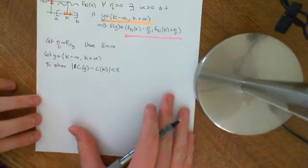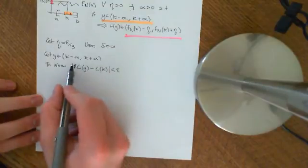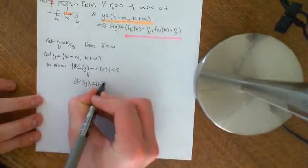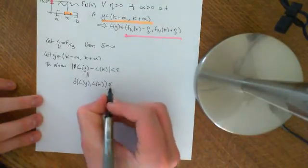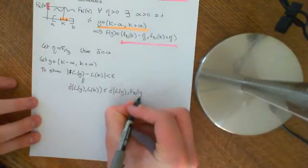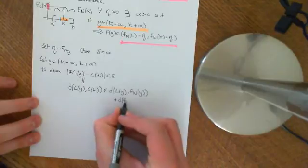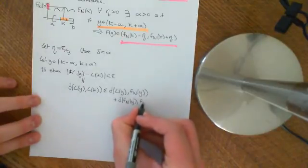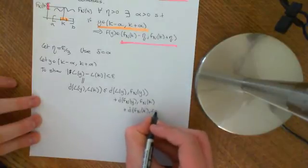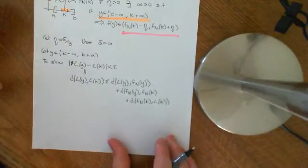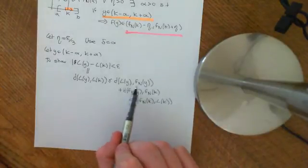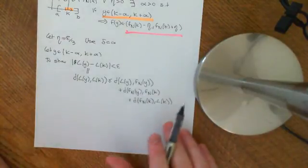We're going to apply the triangle inequality for the real numbers. This is effectively the distance between L(Y) and L(K). So this is going to be less than or equal to: the distance from L(Y) to f_N(Y), plus the distance from f_N(Y) to f_N(K), plus the distance from f_N(K) to L(K). We've used the generalized triangle inequality — you get that by induction on the triangle inequality.